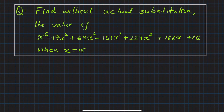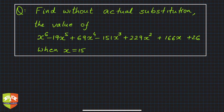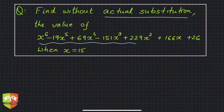Welcome again to another session on problem solving. We have been solving problems related to factor theorem and remainder theorem. The given question says: find, without actual substitution, the value of the given polynomial. The polynomial looks very big and ugly, and we have to find its value at x equals to 15.